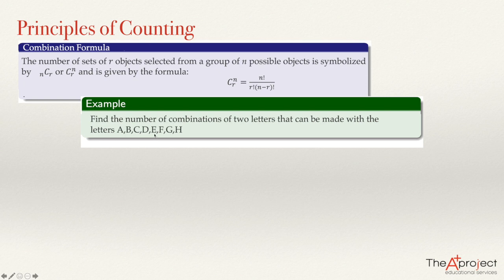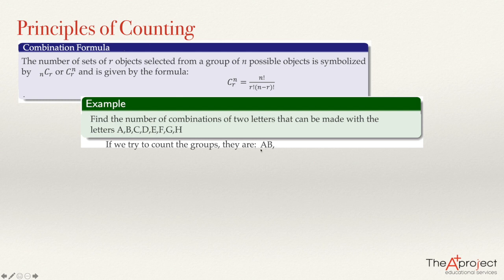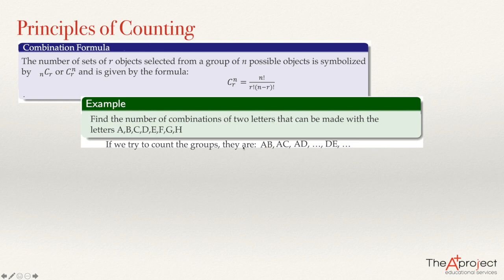Let's find the number of combinations of two letters that can be made with the letters A, B, C, D, E, F, G, H — the same problem as before, but now counting combinations. Without the formula, AB is one combination, AC is another, AD is another, BC is another, and so on. But when I count AB, I do not also count BA, because AB and BA are the same combination. So we will have fewer elements than in permutations.